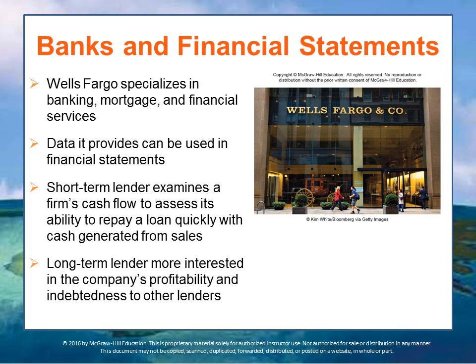To determine this ability, a short-term lender examines a firm's cash flow to assess its ability to repay a loan quickly with the cash being generated on a daily basis from sales — in other words, it could pay the loans off and still cover all of its expenses. A long-term lender would be more interested in the company's profitability, how much it owes other lenders, and how those loans are guaranteed. So that's how banks use accounting statements.